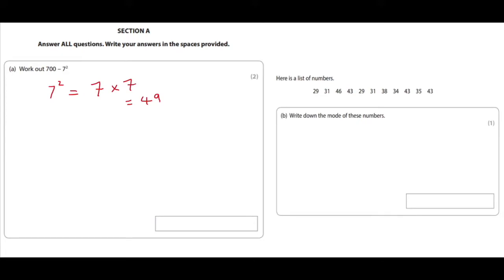So now we have 700 minus 49. Okay, so this part of the test is just to show that you know how to do column subtraction with zeros in the top number. So this is what we do.